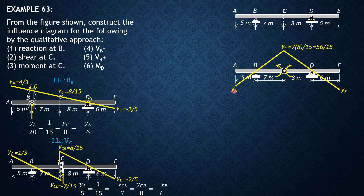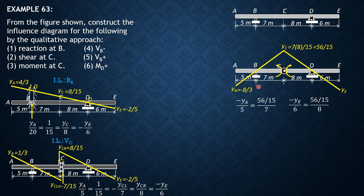The remaining ordinates are determined by similar triangles. Negative YA is to 5 equals 56 over 15 is to 7. Likewise, negative YE is to 6 equals 56 over 15 is to 8. Computing these ordinates: YA equals negative 8/3, and YE equals negative 2.8, the same as before. This is the influence line for moment at C.